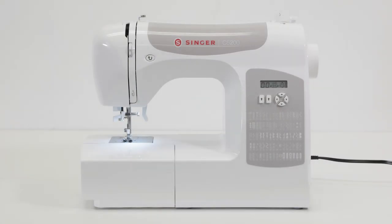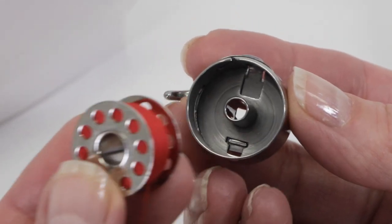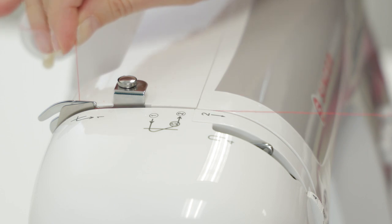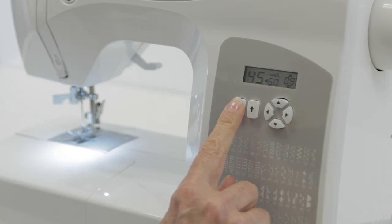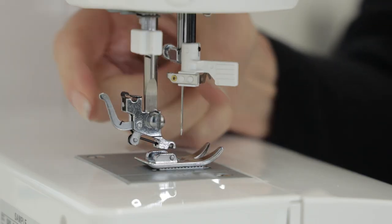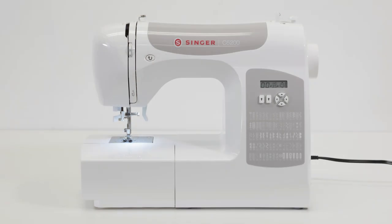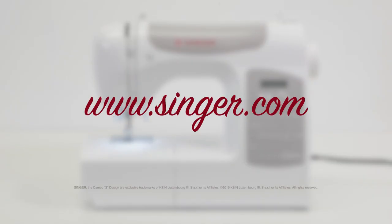We'll begin with a quick overview of the machine and its main parts. Then we'll show you how to wind and insert a bobbin and how to thread the top of the machine. This will be followed by selecting stitches, sewing a buttonhole, changing presser feet, and changing needles. For more information, a full instruction manual is available on the Singer website to view or download any time. So now let's get started.